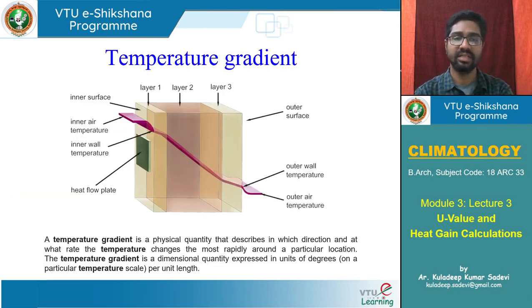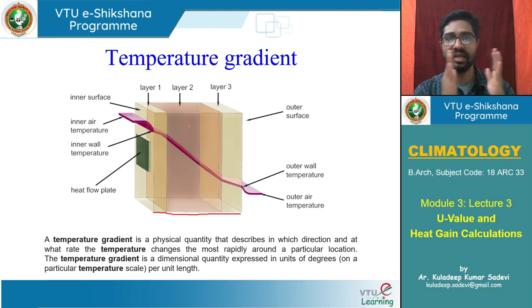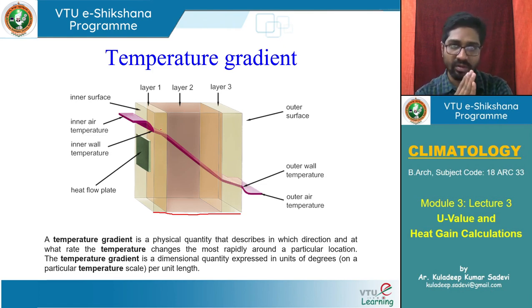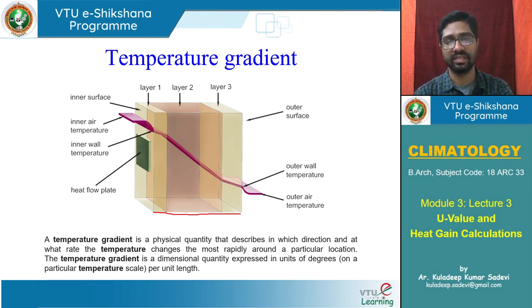The temperature gradient across wall layers was discussed in previous lectures. If layers are arranged by resistance values on a scale, the temperature graph is linear. But when viewed by actual material thickness, different materials offer very different resistances, producing a non-linear temperature gradient across the assembly.